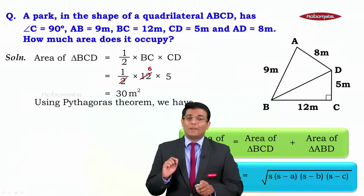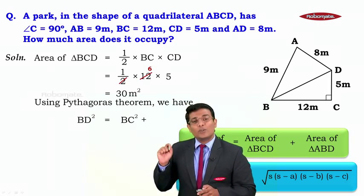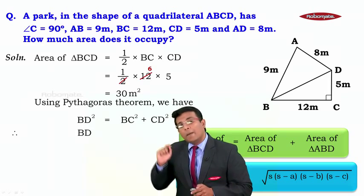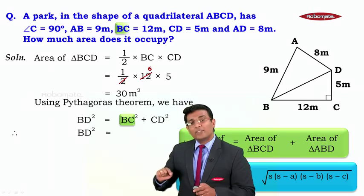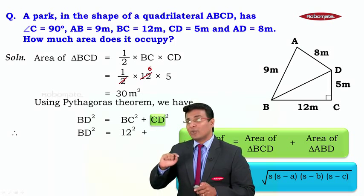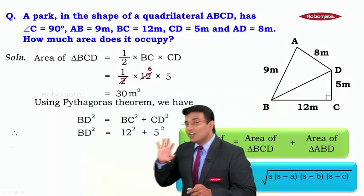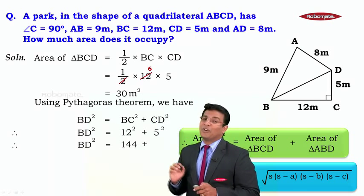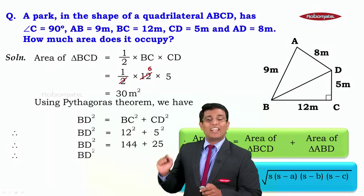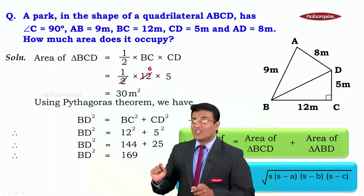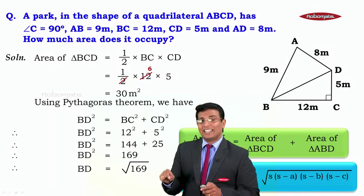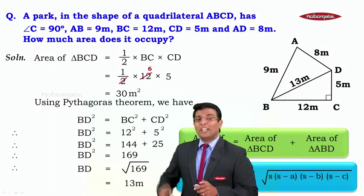So we write using Pythagoras theorem we get BD square is equal to BC square plus CD square. That means we get BD square is equal to 12 square, the value of BC, plus 5 square, that is the value of CD. Now we know 12 square is 144, and 5 square is 25. So we get BD square is equal to 169. That means we get the length of BD is equal to root of 169, and we know we got the length of BD to be 13 meters.